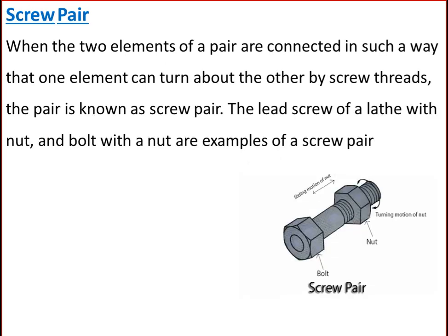Next is a screw pair. When two elements of a pair are connected such that one element can turn about the other by screw threads, the pair is known as a screw pair. The lead screw of a lathe with nut, and bolt with a nut, are examples of a screw pair.